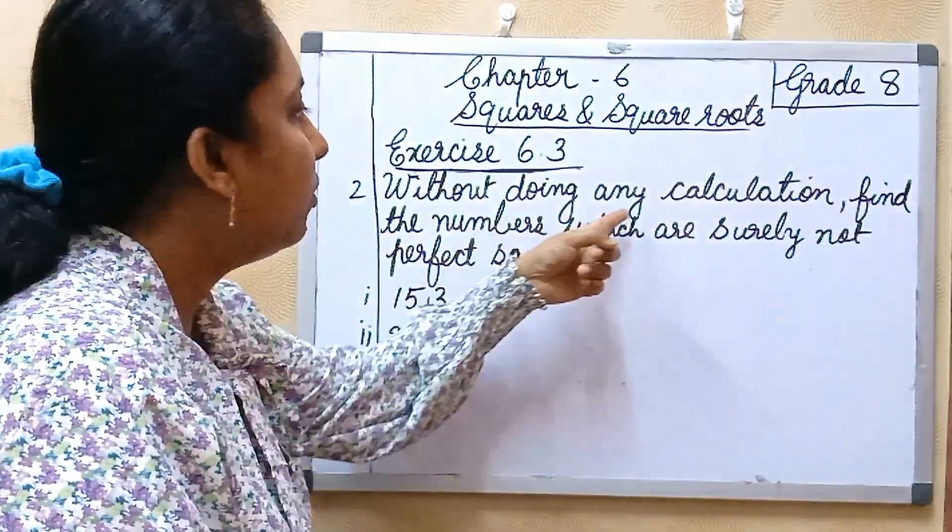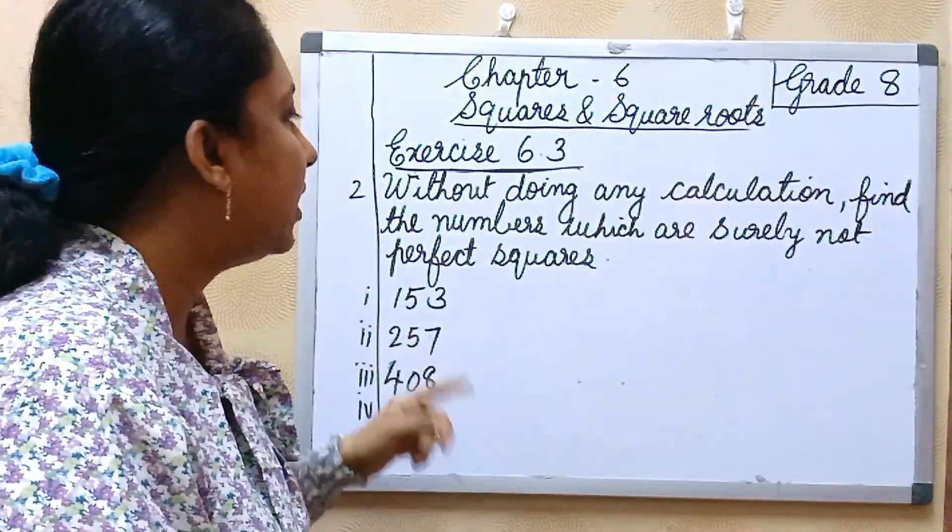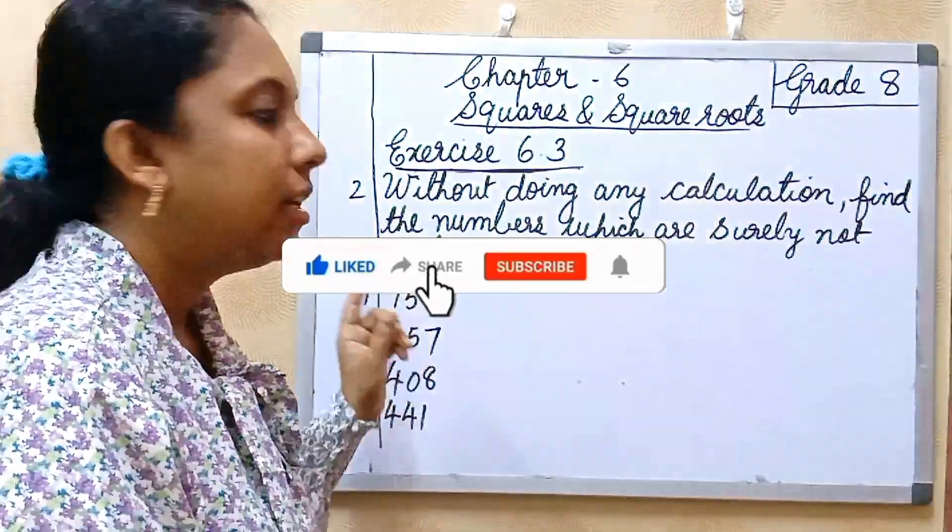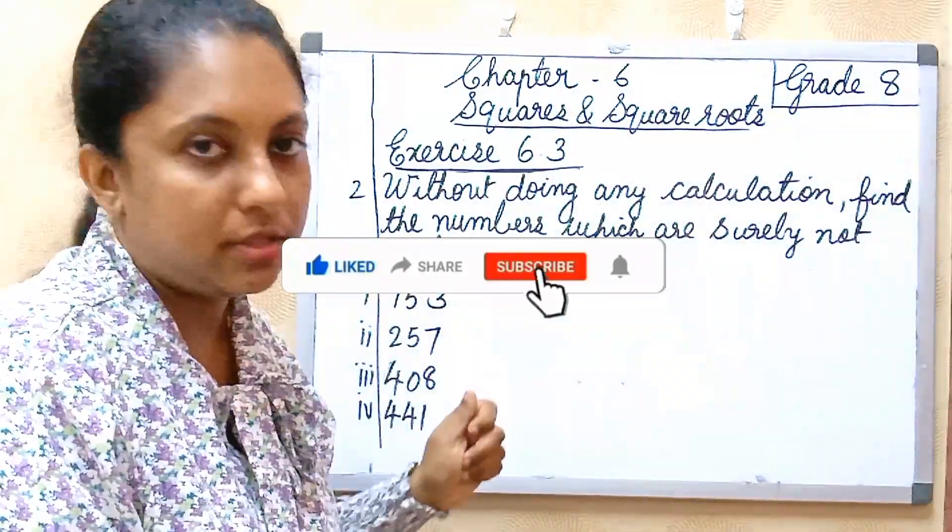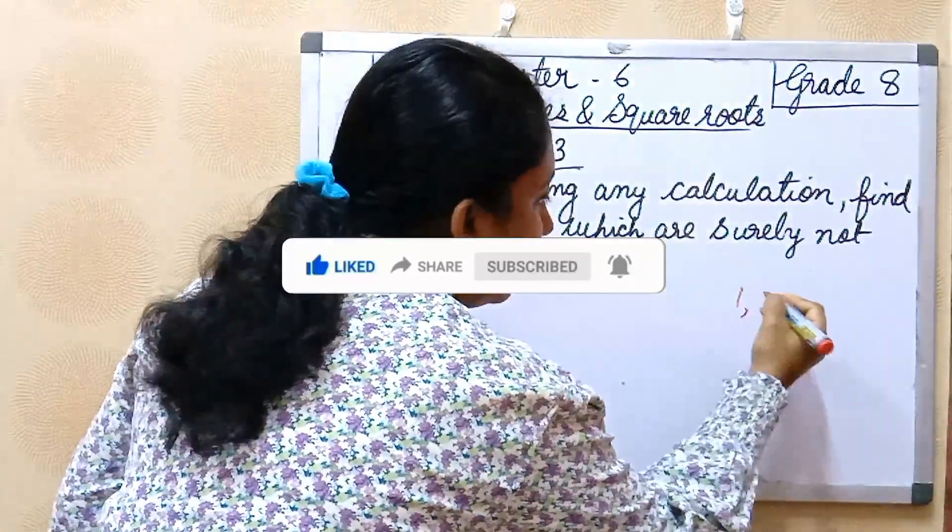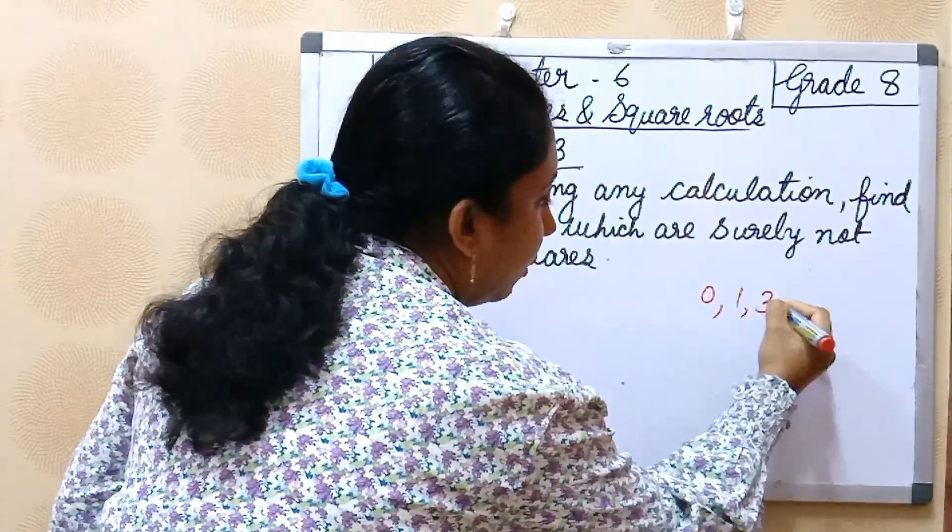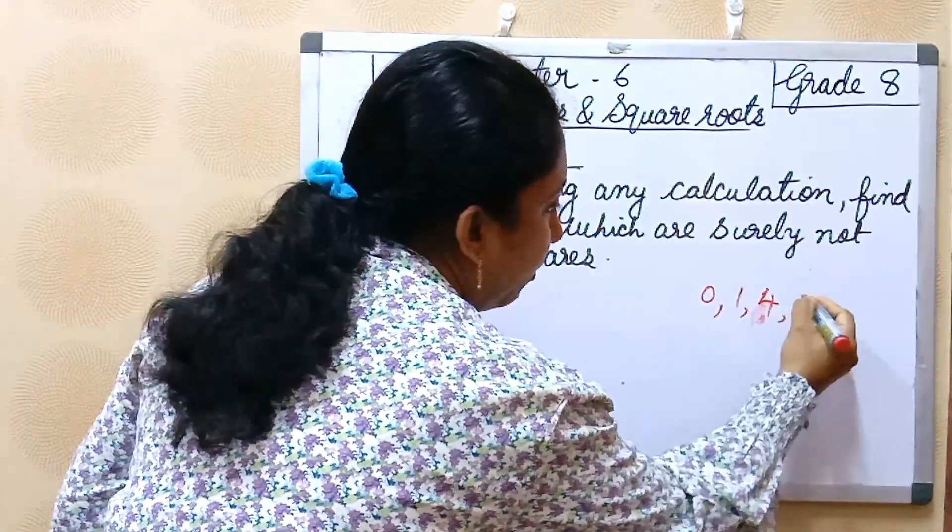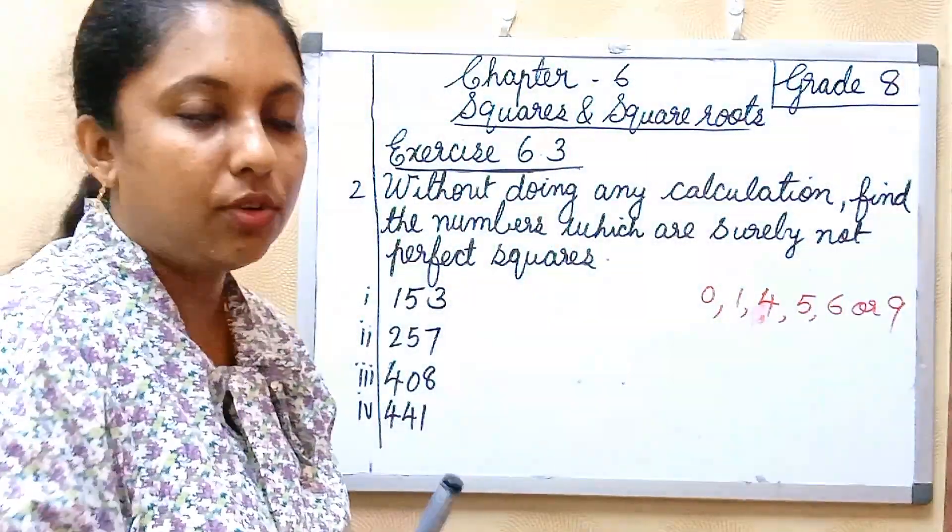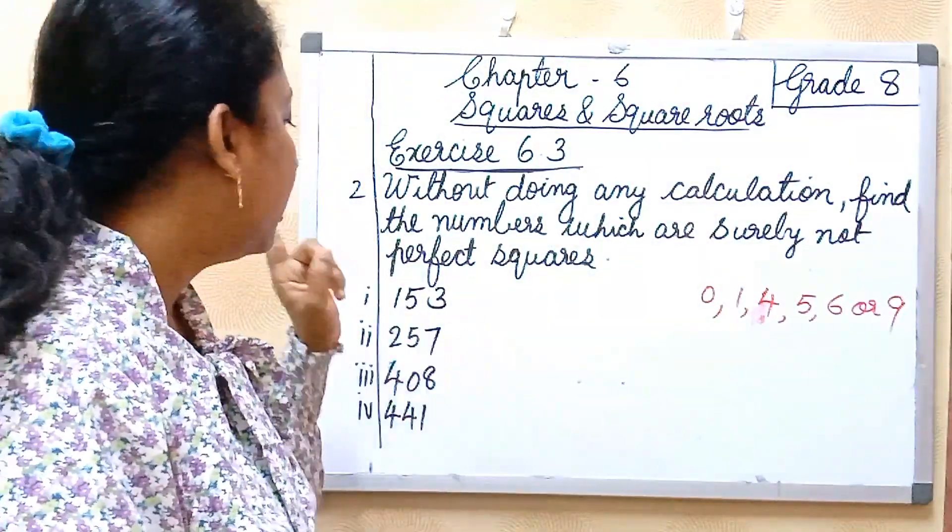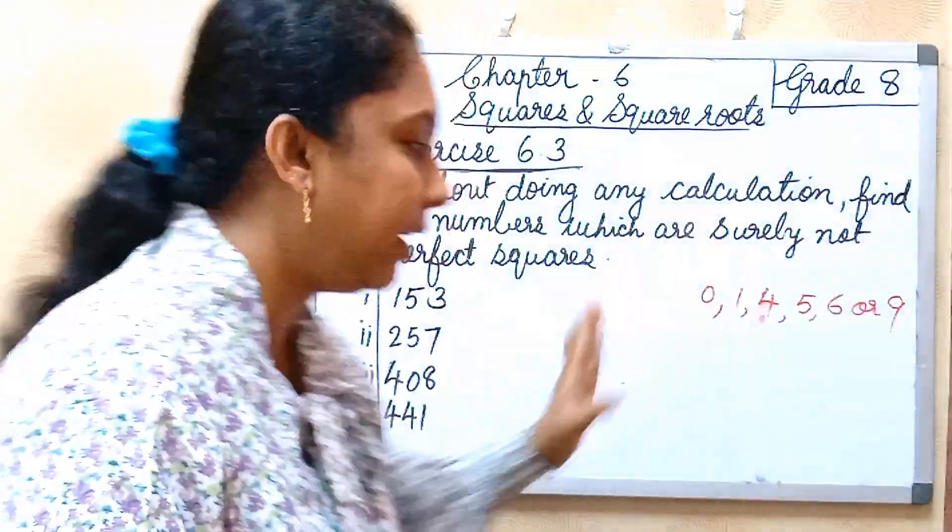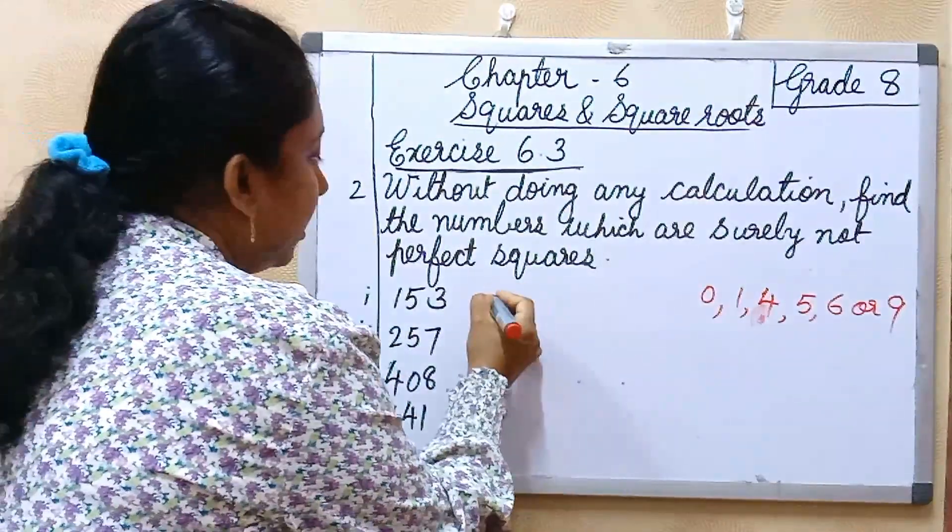Hope it is clear. Second, possible without doing any calculation, find the numbers which are surely not perfect squares. If the number is a perfect square, the ending digit should be 0, 1, 4, 5, 6, or 9.